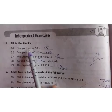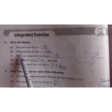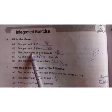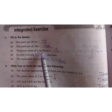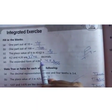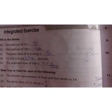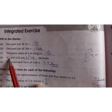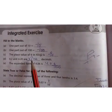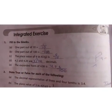Fill in the blanks. 1 part out of 10. So 1 part out of 10 means 1 upon 10. Similarly, 1 part out of 100 is 1 upon 100. The place value of 6 in 43.62. So the place value of 6, 6 is here and what is the value of it? It is in 10th place. So 6 upon 10. Next we have 4.2 and 4.20 are dash decimals. They are called as like decimals because the value of both decimals are same.